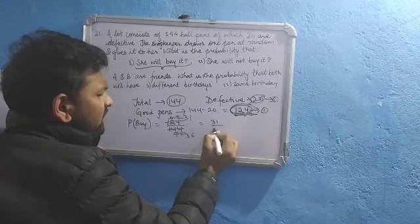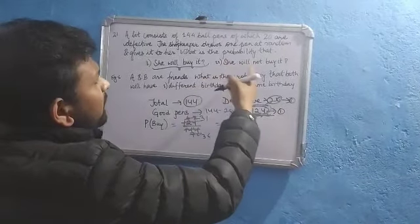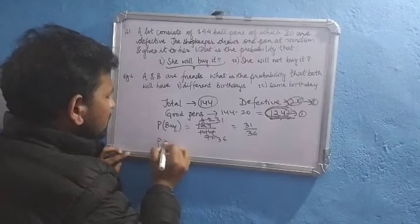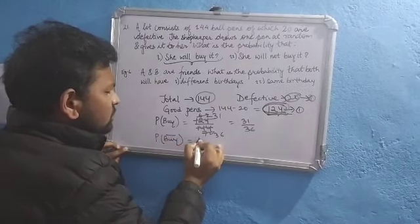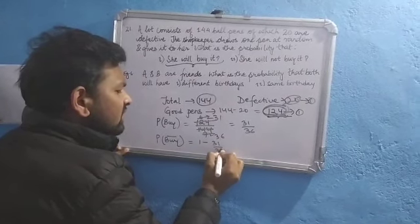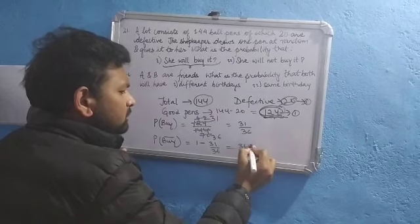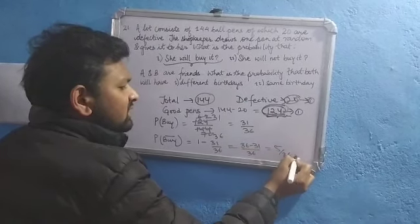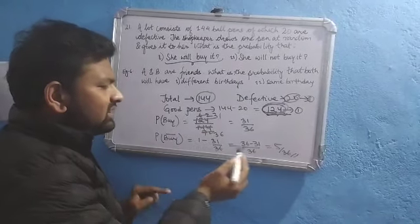The probability will be 31 by 36. Now, what is the probability that she will not buy it? Probability of not buying is 1 minus 31 by 36. This gives 5 by 36. It's very simple.